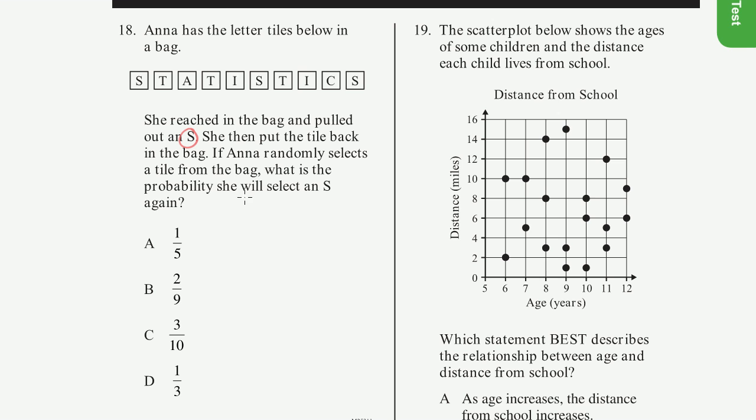So this is a trick question on some level. Because this first part, that she reached in the bag and pulled out an S, and then she then pulled the tile back in the bag, that doesn't do anything. The fact that she pulled out an S and then put it back in the bag, that shouldn't change what happens after. If she took out the S and kept the S out, then this would be a different type of problem. But since she took out the S and put it back in, this is almost useless information. We still have all of these letters in the bag.